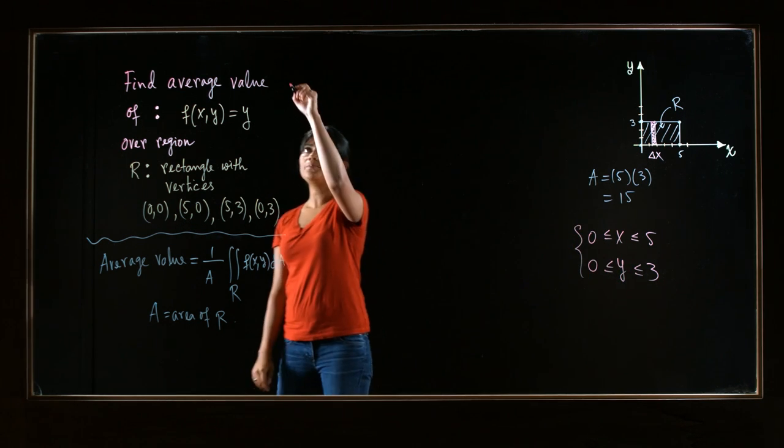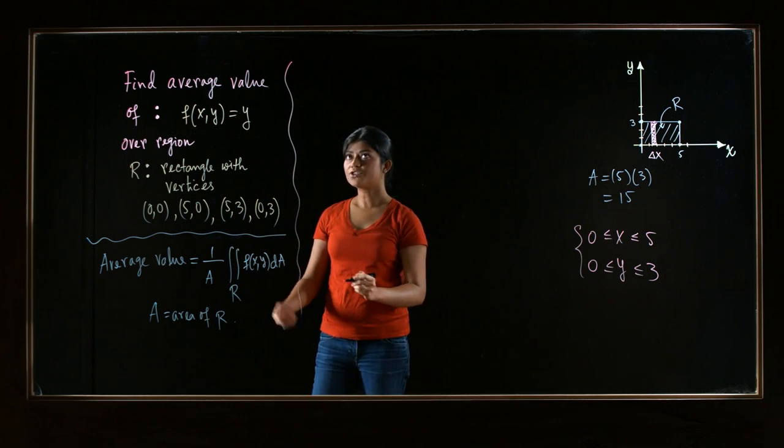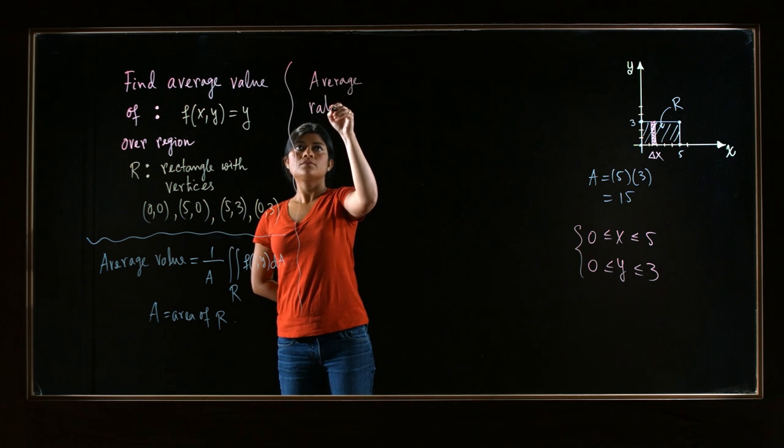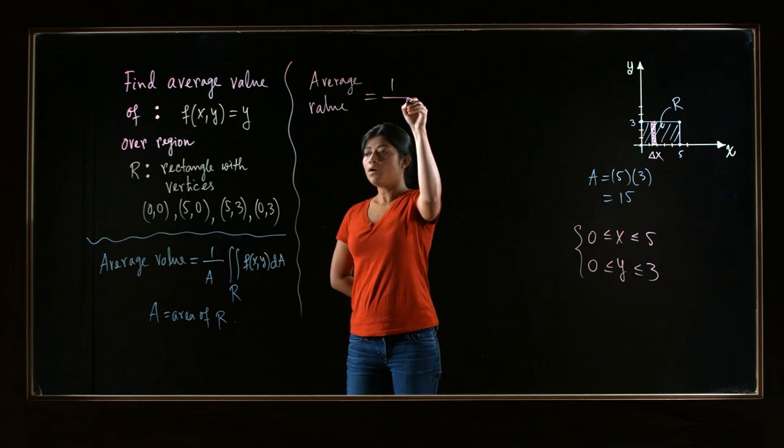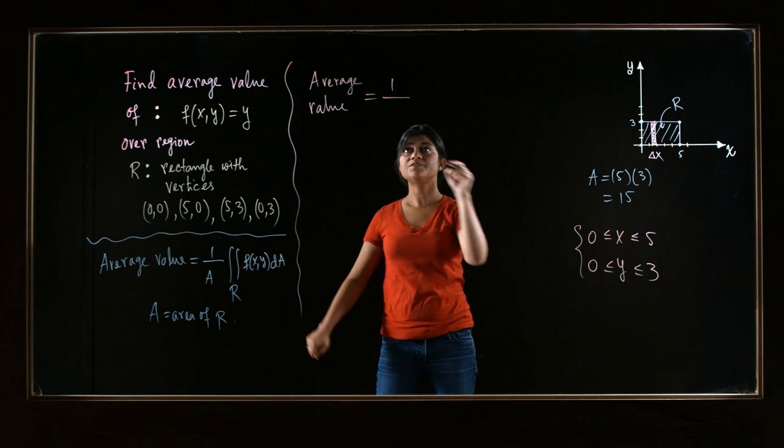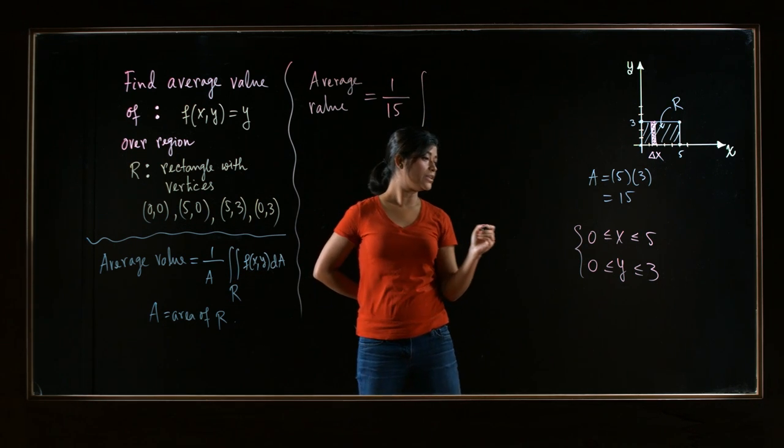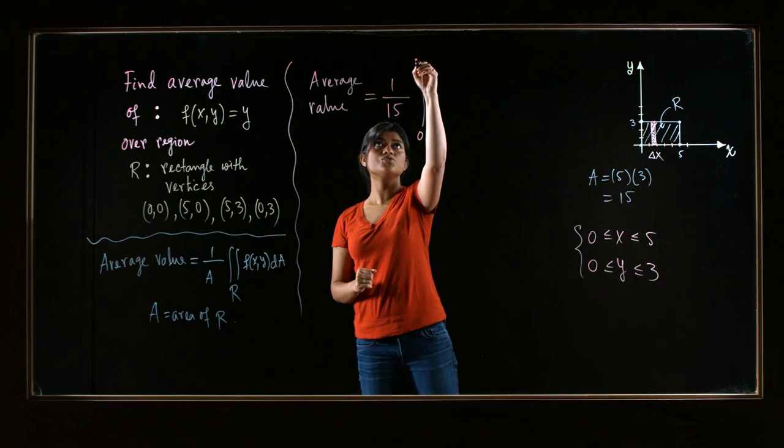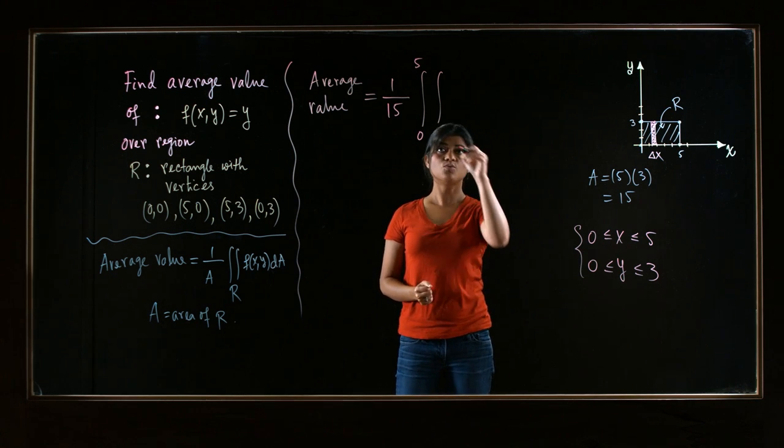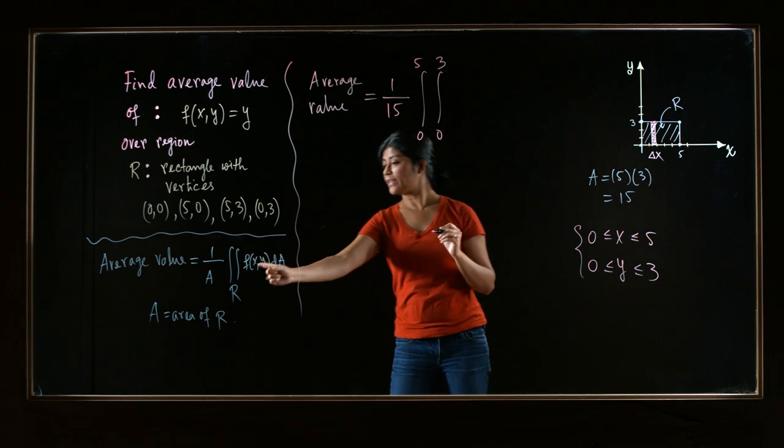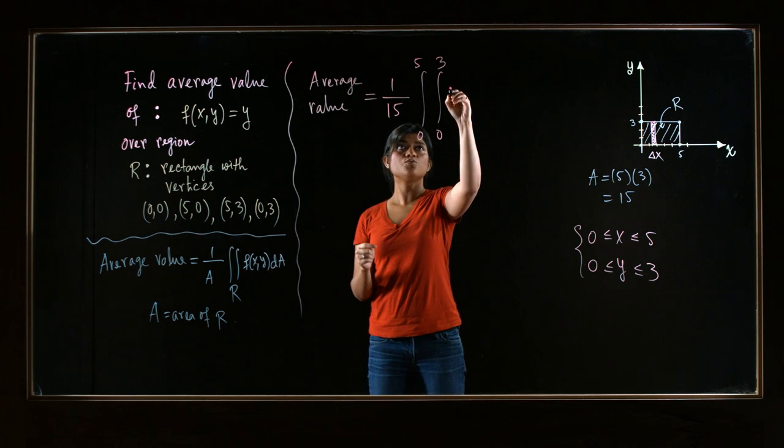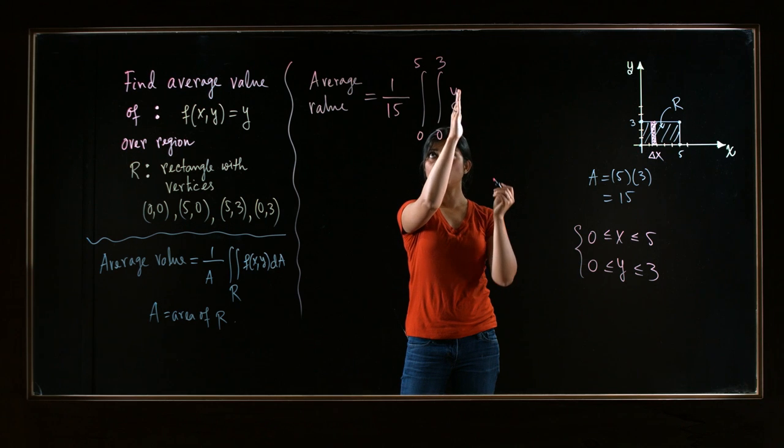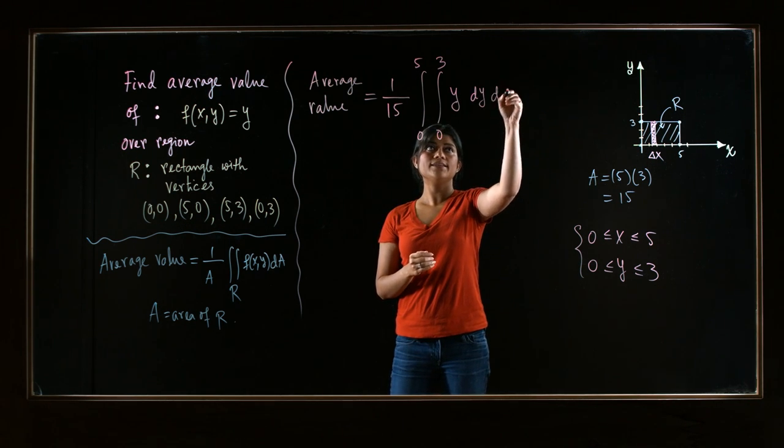Now let's set up the integral that will give us the average value. So average value is 1 over A, but A is 15. And then double integral, but the outer integral will have the x limits. So this one is from 0 to 5. And the inner one is the y limits, from 0 to 3. And then we have to write the function. Function is y. And dA, which way should we write? Well, y comes first, so dy and then dx.